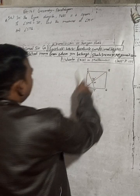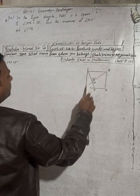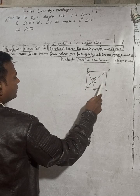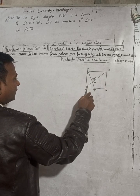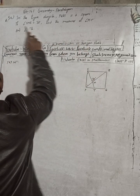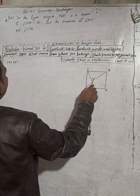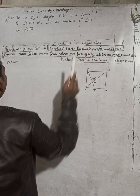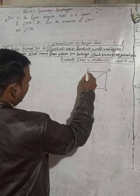The question is: in the figure alongside, PQRS is a square — it is a square because all sides are equal and each angle is 90 degrees. Given angle SMR is 70 degrees, find the measure of angle PST and angle STQ.